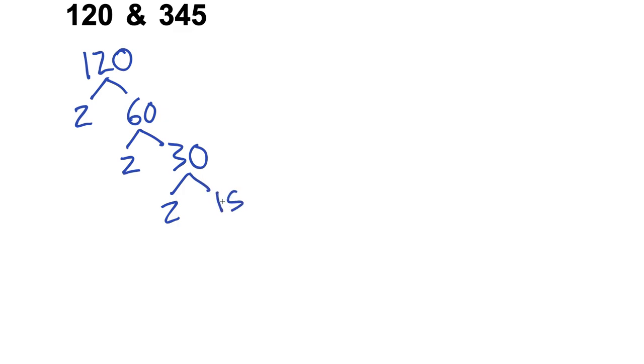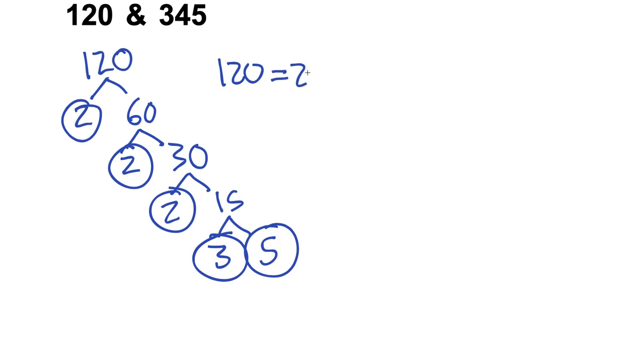We're just going to keep going, and then 15 is kind of funky because it's an odd number, but we have 3 and 5 as the prime factors. I'm going to circle all the end nodes here and that looks like 120 equals 2 times 2 times 2 times 3 times 5. If you're more sophisticated you would write 2 cubed times 3 times 5, but whatever way you do it is totally cool.